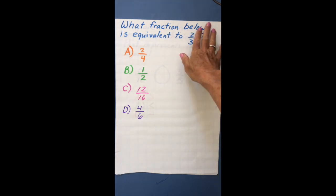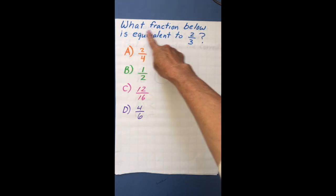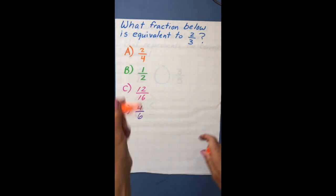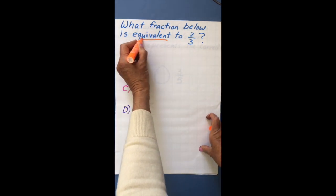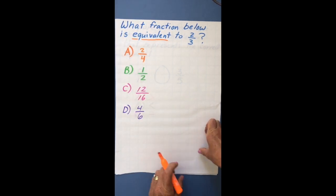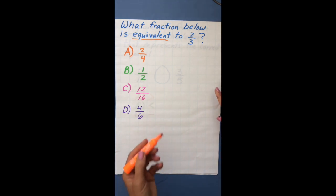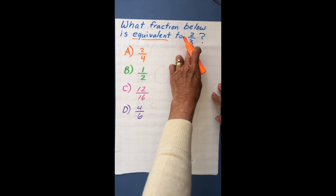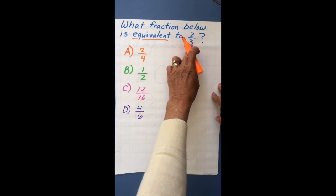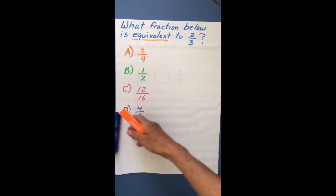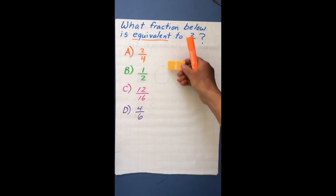I'm going to show you how to solve this problem. It says what fraction is equivalent to 2 thirds. The key word is 'equivalent' — that's our math vocabulary. Equivalent fractions is the name for fractions whose value are the same. So we're just trying to find the fraction whose value is the same as 2 thirds.